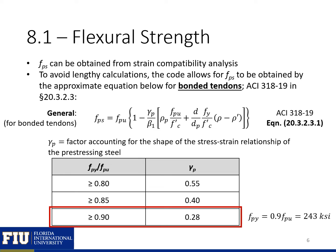We can determine the stress in our strands at the nominal moment capacity in a few different ways. One is the strain compatibility approach, where we solve for the stress in the strands using actual stress-strain curves. We can also use given equations in ACI 318 or AASHTO LRFD. The equation shown here is from ACI 318, and we can calculate the stress in the strand at ultimate failure based on this equation with a number of different variables.